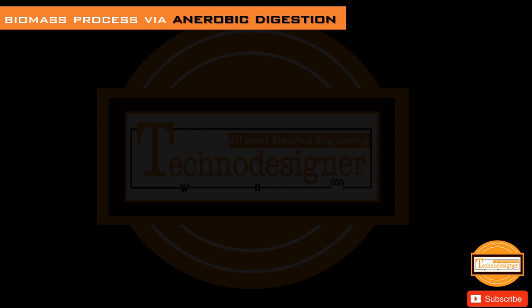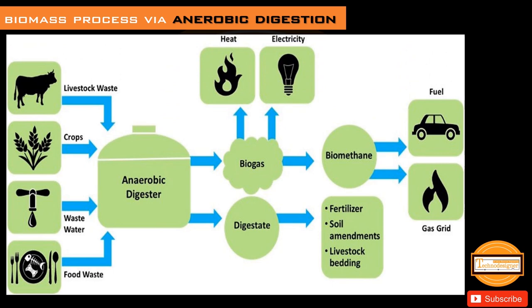Biomass process via anaerobic digestion: biomass products like animal waste, crops, etc. are introduced into the anaerobic digester where digestion occurs and the biomass product is converted into biogas and digestate. Digestate is used as fertilizer, livestock bedding, etc., as shown in the figure. The biogas is used as heat, electricity, and biomethane. Biomethane can be used as fuel in vehicles or as gas in grid stations or houses.